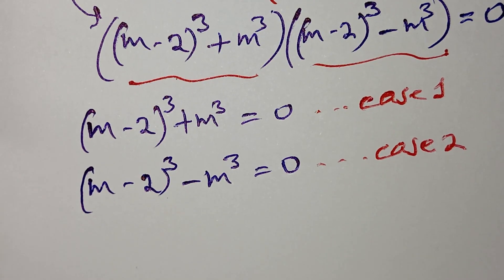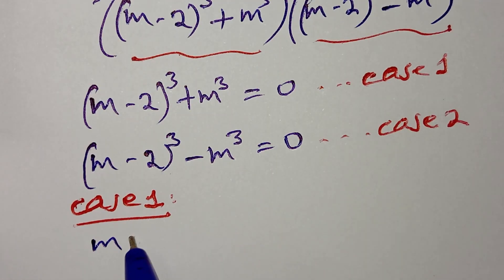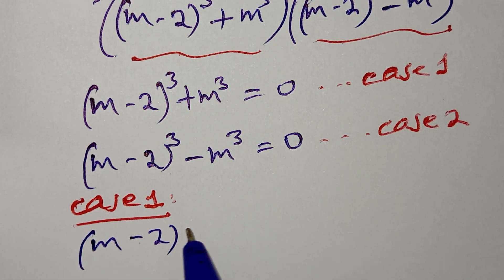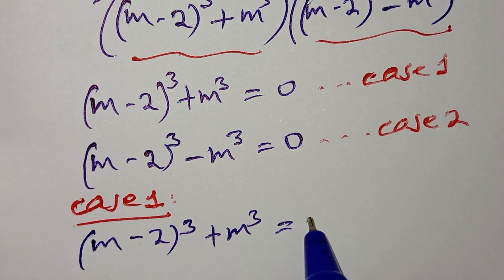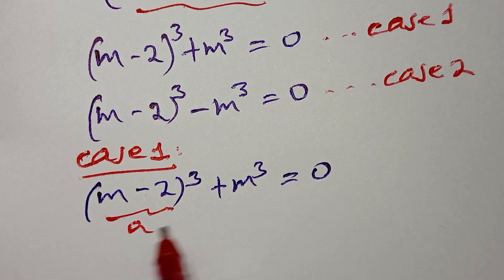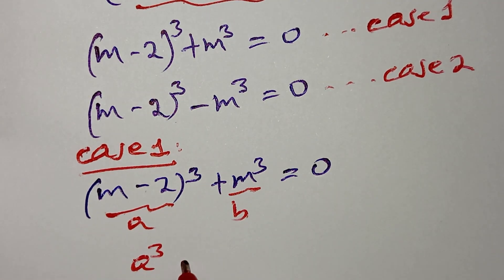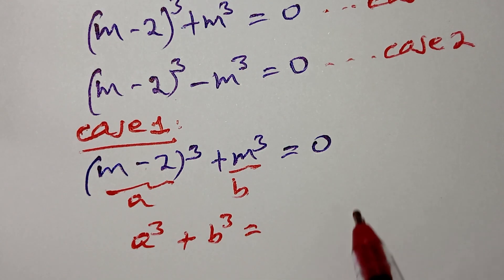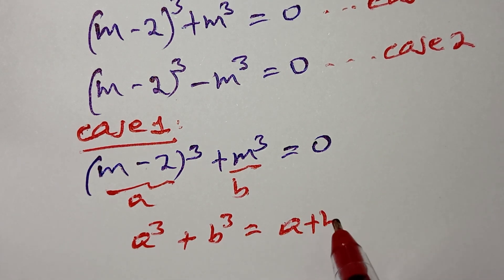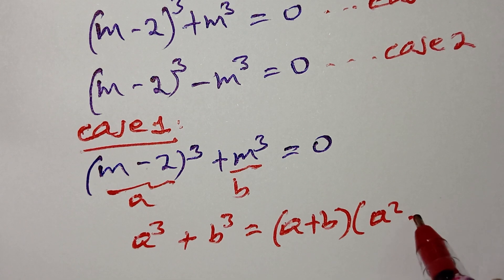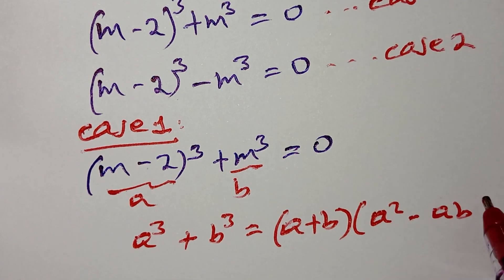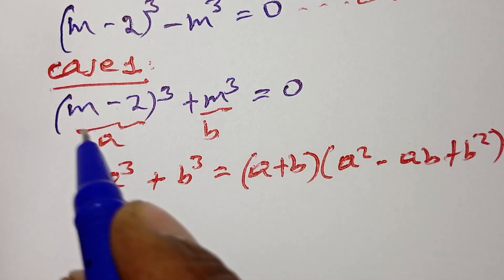Now solve Case 1: (m minus 2)³ plus m³ equals 0. If a equals (m minus 2) and b equals m, then a cubed plus b cubed factors as (a plus b) times (a squared minus ab plus b squared).